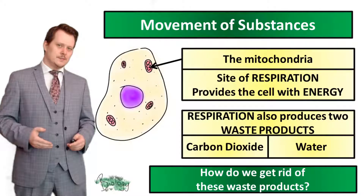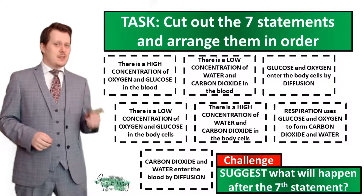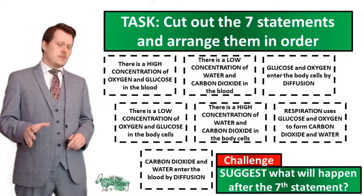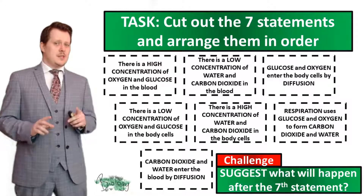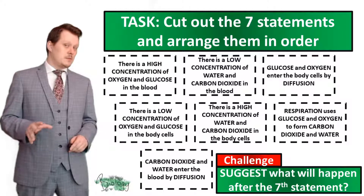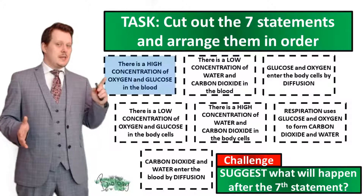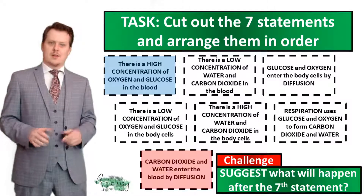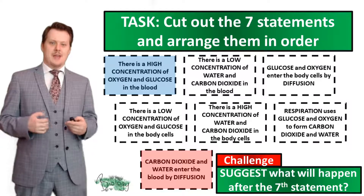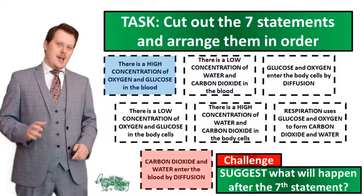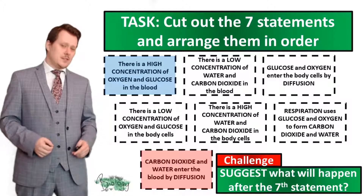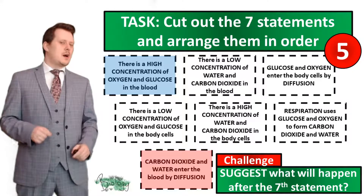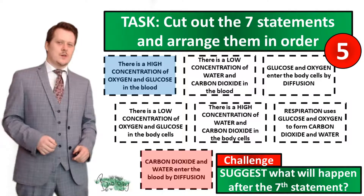For your next task, take these seven statements from the worksheet and arrange them in order. If you haven't got a worksheet, copy out the statements and label them one through seven. We should begin with: 'There is a high concentration of oxygen and glucose in the blood.' The last statement is: 'Carbon dioxide and water enter the blood by diffusion.' For a challenge, suggest the events that occur after this seventh statement. Pause the video if you need more time.